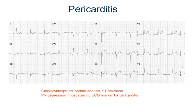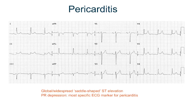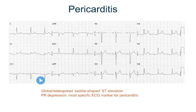In pericarditis, you see ST elevation, but it is not localized to a certain territory — it is global and widespread, like in lead 1, lead 2, V4, V5, and V6. The shape of the ST elevation is saddle-shaped or concave. The other marker is PR depression, which is the most specific marker for pericarditis. You can see it in lead 1, lead 2, and even in V4, V5, and V6.